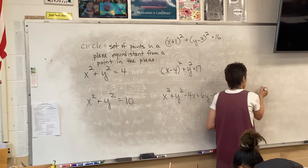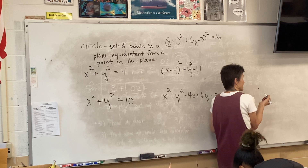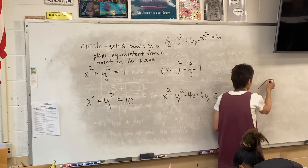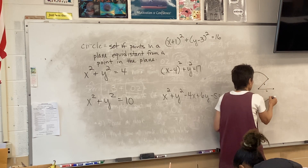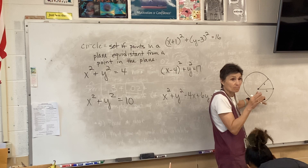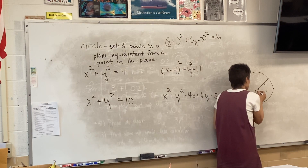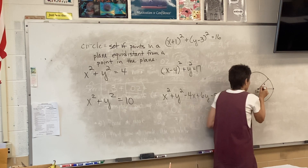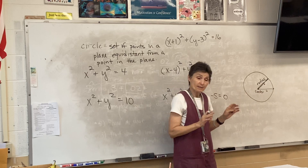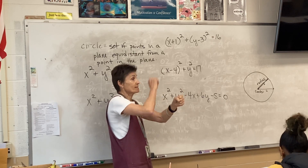So a circle is a set of points in a plane equidistant from a point in the plane. If you think about that — here's a point in the plane. If I want all the points that are the same distance away, let's pick six units. I could go over here — there's six. I could come up here — there's six. If I did that all the way around, you get a circle. That given point is called the center of the circle, and that equidistance — in my example it was six — is called the radius.